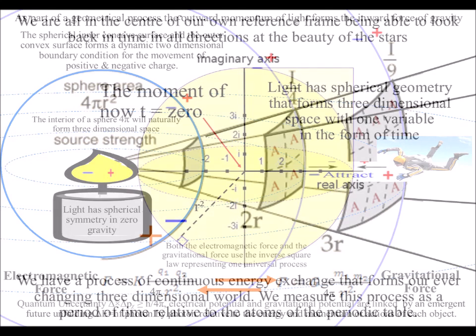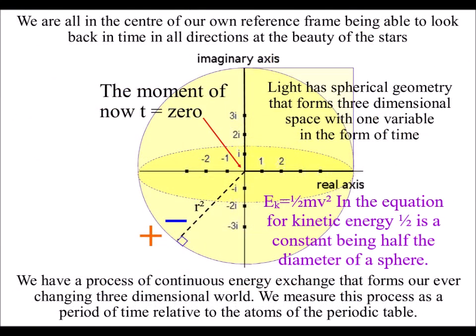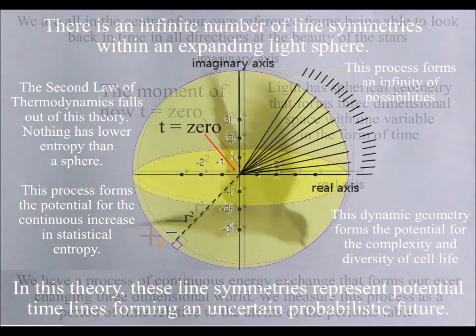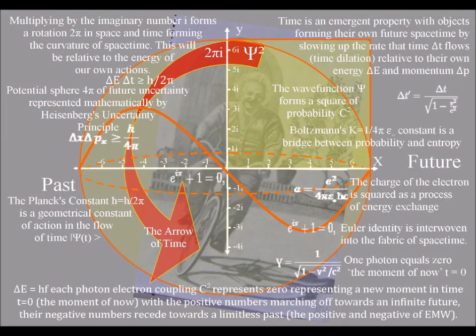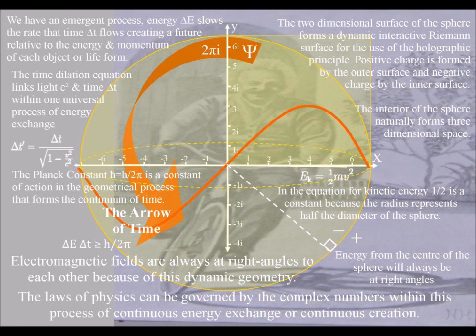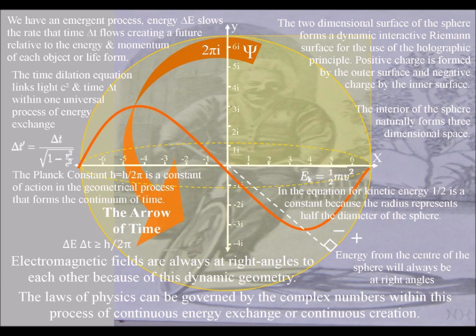But above all, this geometrical process gives us a deeper understanding of time. Within an individual reference frame, the absorption of light always comes before the emission, forming an arrow of time within that reference frame. The spontaneous absorption and emission of photon energy is represented by